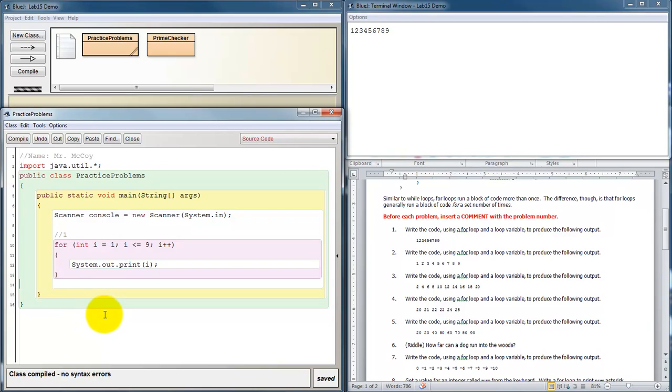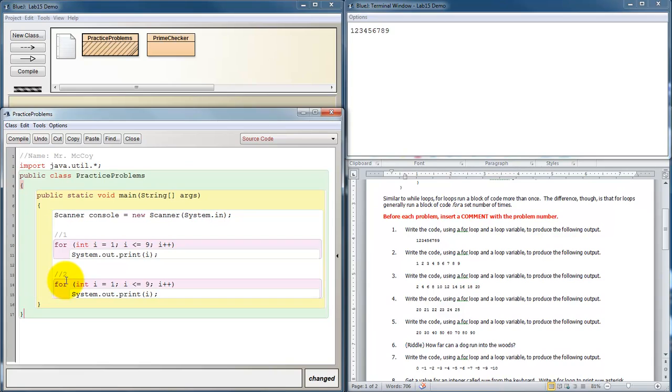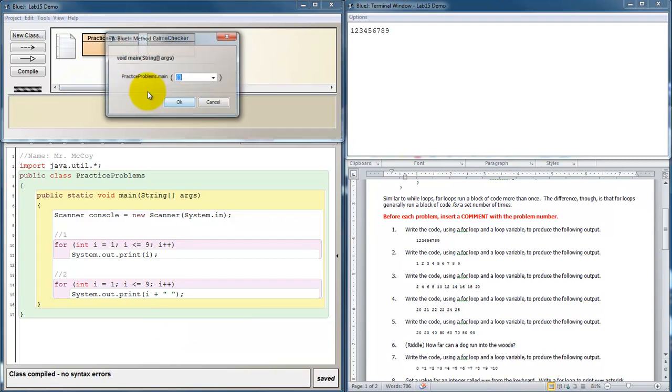Now just like if statements and while loops, I only have one thing inside of the braces. So the braces are actually not necessary. I could write my for loop like this. And anything that I put below it will not be included in the loop since the loop only has one line of code with it. Problem two says do the exact same thing but this time put spaces. Easy. Copy. Paste. But instead of just printing i, I want to print i and then concatenate on a space. Compile. Run.